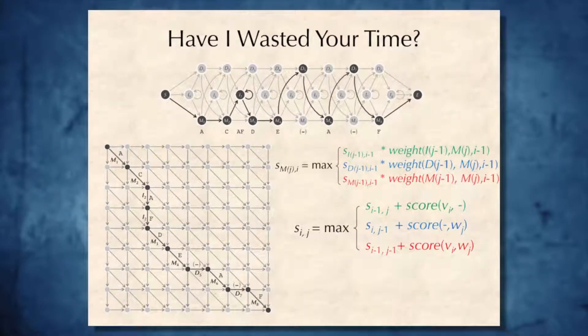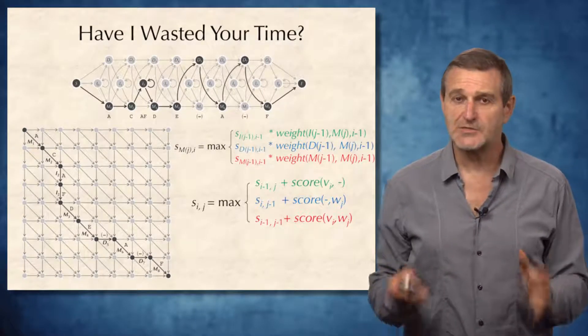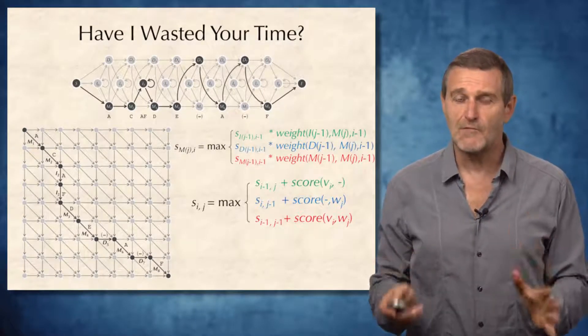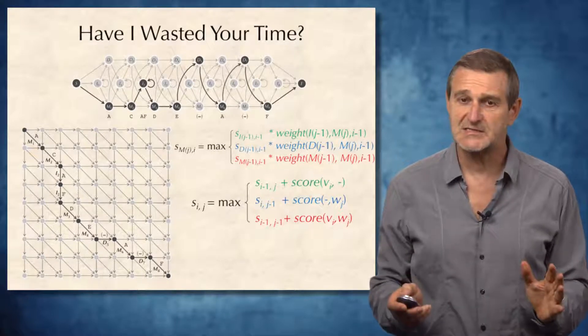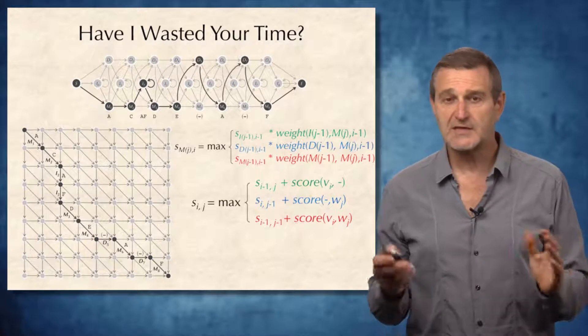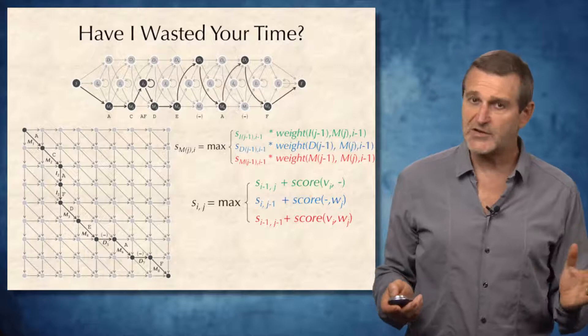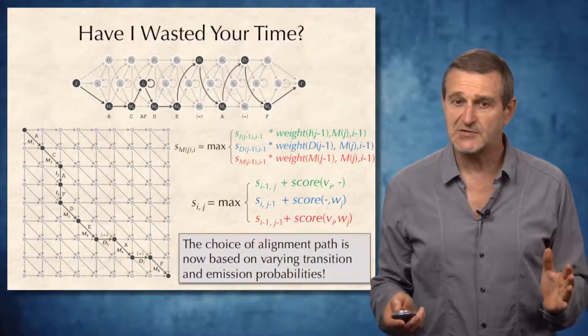Indeed, the recurrence for the Viterbi algorithm is very similar to the recurrence for the traditional sequence alignment. For the Viterbi algorithm, the score at the node is equal to the maximum of three scores of the preceding states. For the alignment, again, the score of the node is equal to the maximum of three scores of its predecessors. So it indeed looks like I wasted your time.